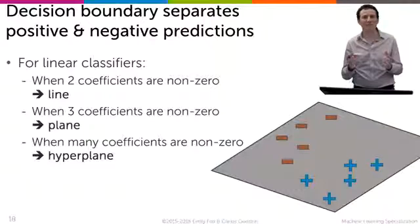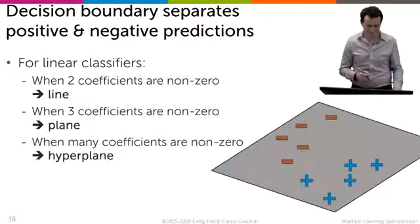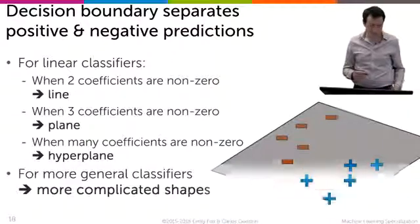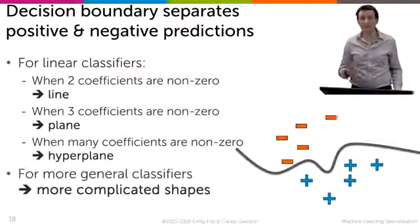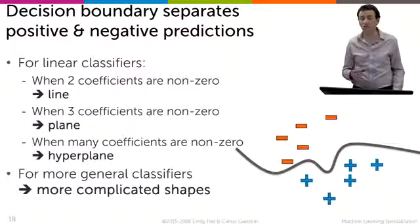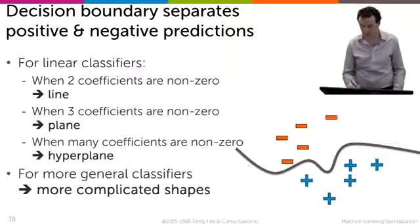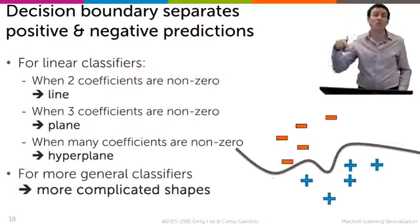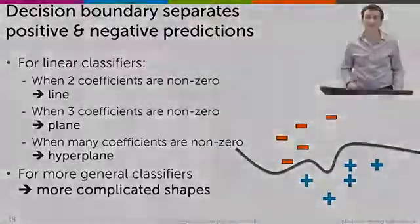That was a sci-fi reference, by the way. In general, if you visualize these hyperplanes in lower-dimensional space, or if you use more complicated features or shapes, you might have a decision boundary that looks like a squiggly, more complicated line.